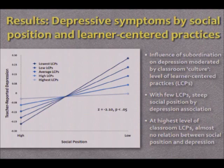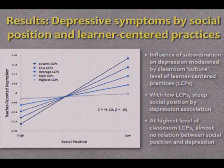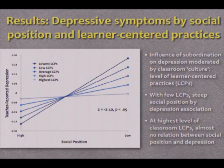We also found, when looking at depressive symptoms by socioeconomic position and classroom culture — the learner-centered practices — that the influence of subordination on depression was moderated by classroom culture. With social position arrayed from dominant to subordinate and teacher-reported depression as the outcome, classrooms were broken down by highest, average, and lowest learner-centered practices. With few LCPs there was a steep social position-by-depression association, but at the highest levels of LCPs there was almost no relation between social position and depression.